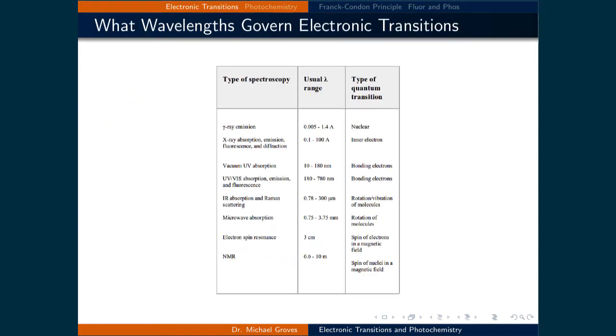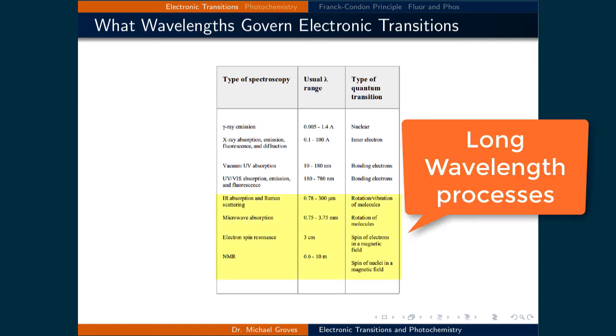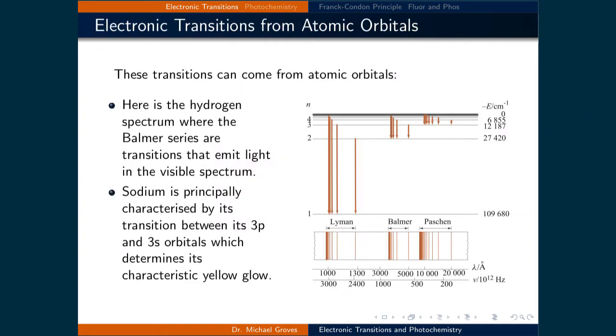The table in the slide summarizes what wavelengths of light stimulate what type of process. At the bottom of the plot are long wavelength photons, which produce spectroscopic effects like NMR, electronic spin resonance, rotational spectroscopy, and vibrational spectroscopy. As we shorten the wavelengths of light into the visible UV and X-ray range, we then stimulate electronic transitions.